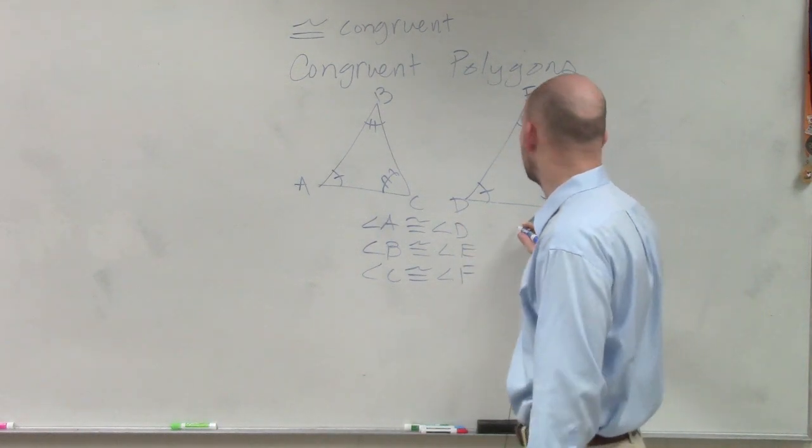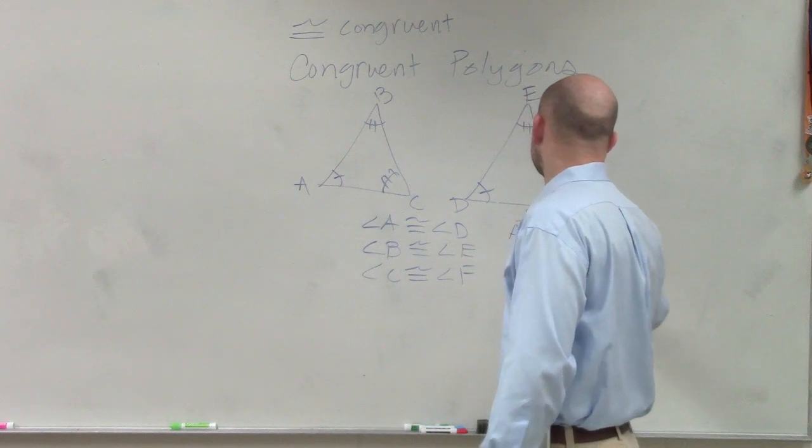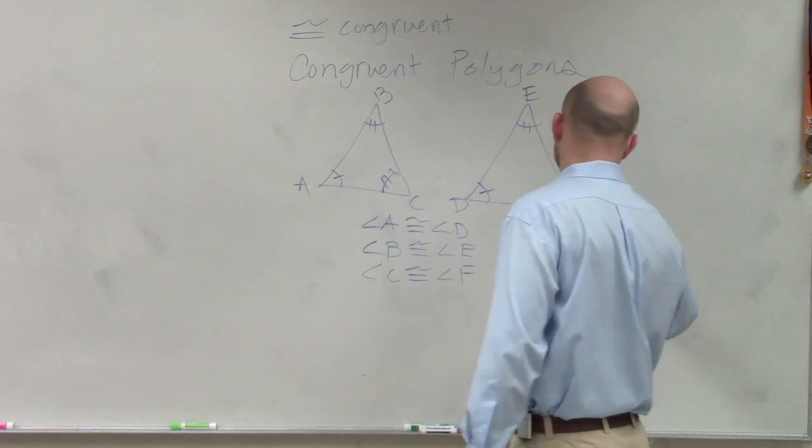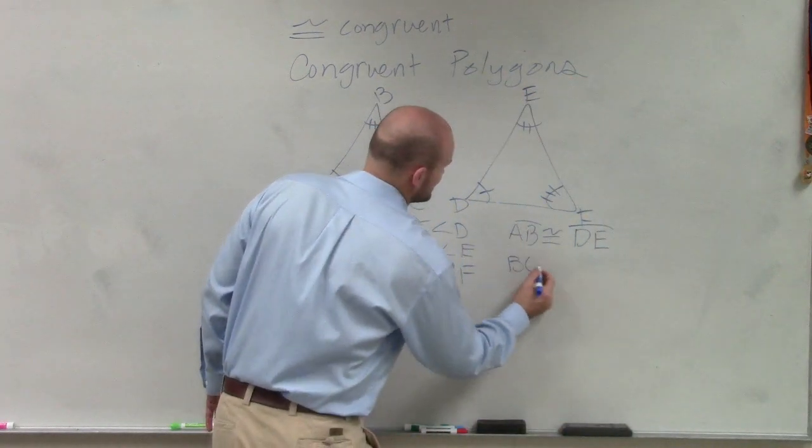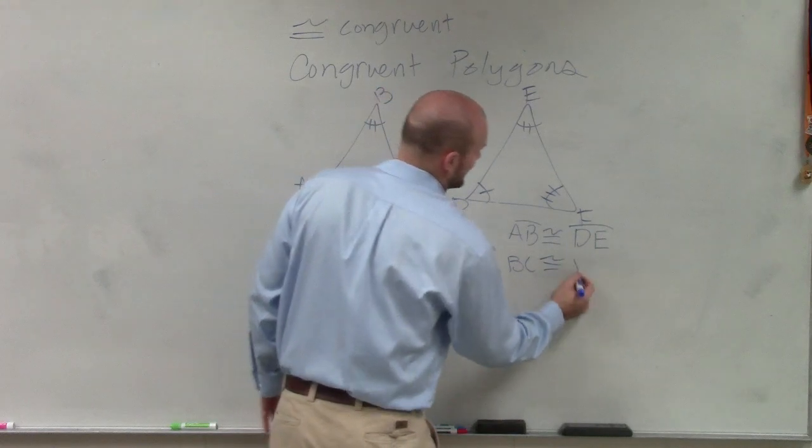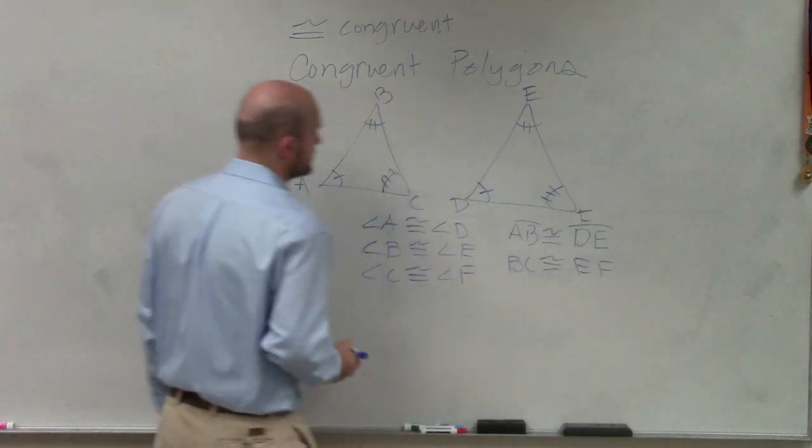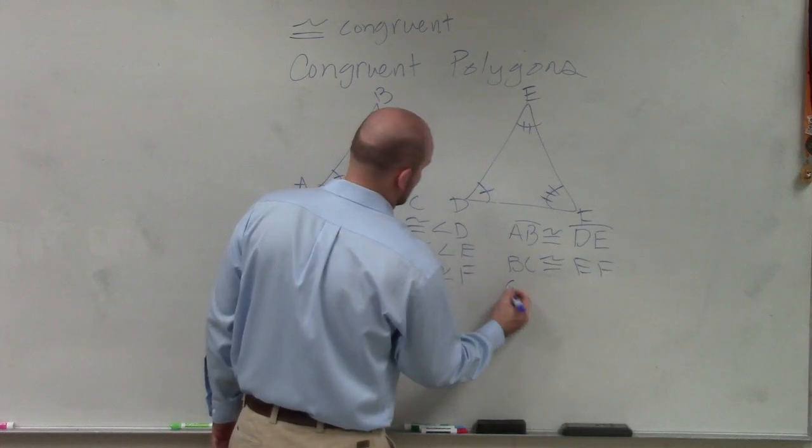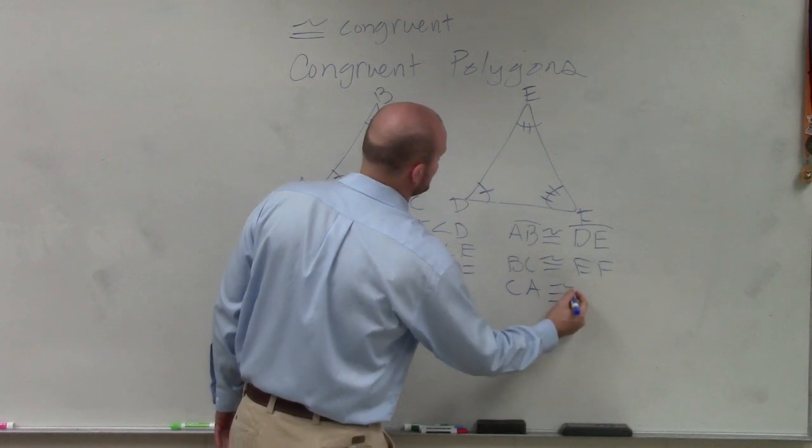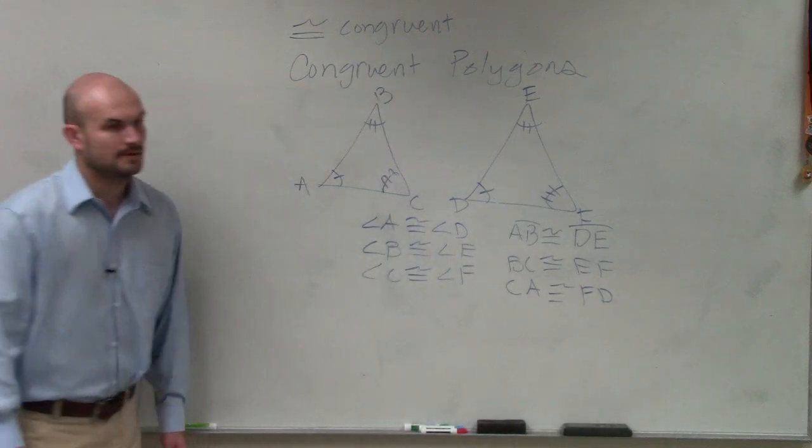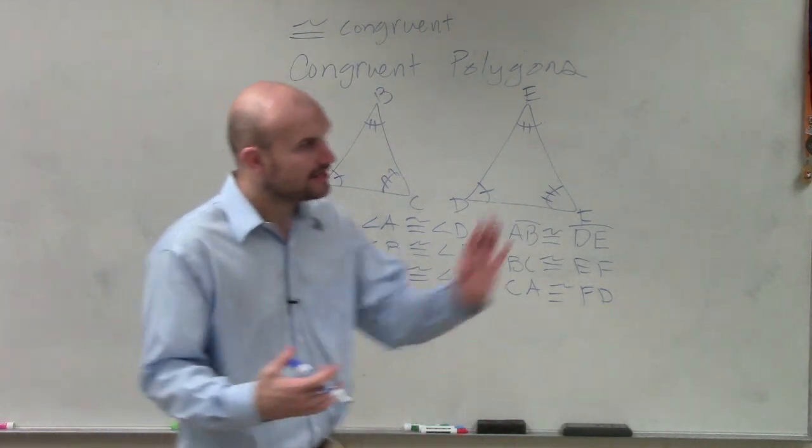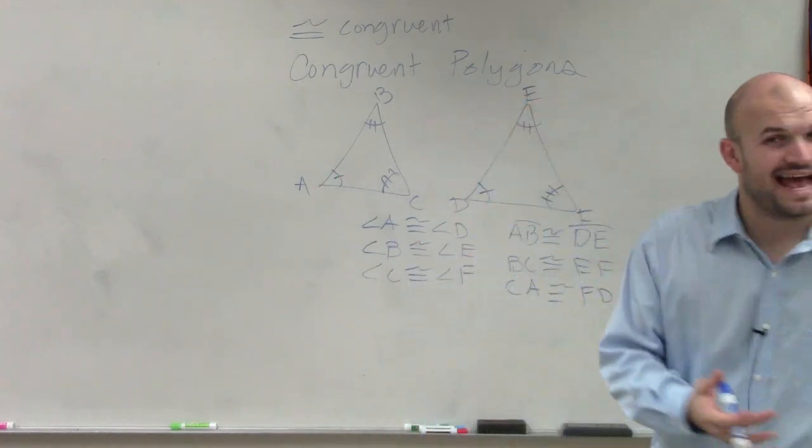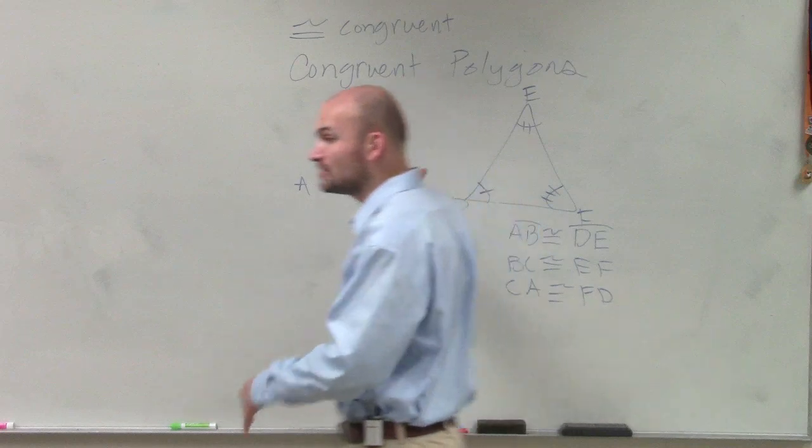So therefore, we also need to show that line AB is congruent to line DE. Line BC is congruent to line EF. And line CA is congruent to FD. So congruent polygons have the exact same measure for all of their angles and the exact same measure for all of their side lengths.